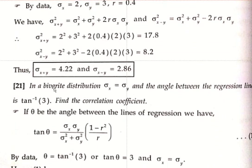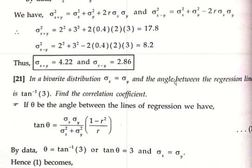Next problem. In a bivariate distribution, sigma x equals sigma y and the angle between the regression lines is tan inverse of 3. Find the correlation coefficient. Solution: if theta is the angle between the lines of regression, tan theta equals sigma x into sigma y over sigma x squared plus sigma y squared, into 1 minus r squared over r. By data, theta equals tan inverse of 3, so tan theta equals 3.